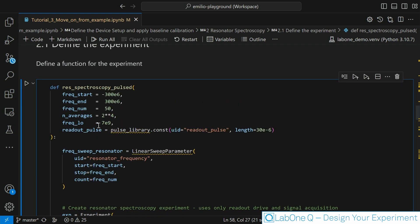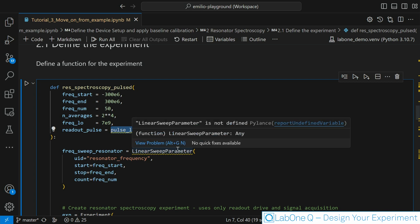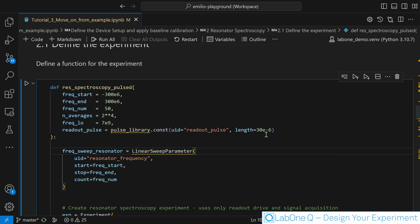All this that I show you now is actually wrapped around a function that I call res-spectroscopy-pulse. As you can see most of the parameters that we see before they are actually passed into this function. As a default we start from minus 300 megahertz compared to the central frequency to plus 300 megahertz. We are testing a total of 50 different frequencies. The number of average is 16 and we are using a central frequency as default 7 gigahertz. The readout pulse we are also passing as a parameter and in this case is just a square wave of a length of 30 microseconds.